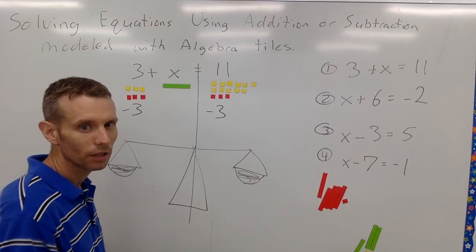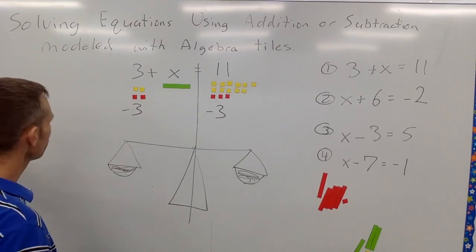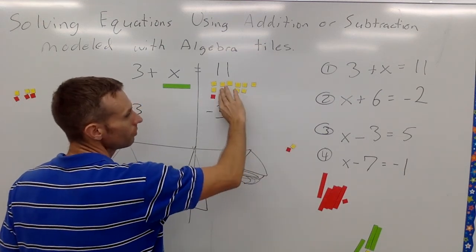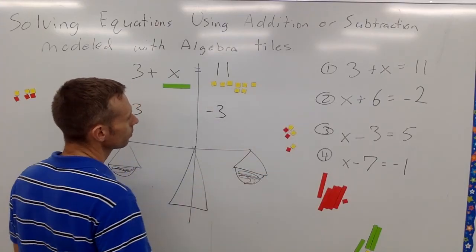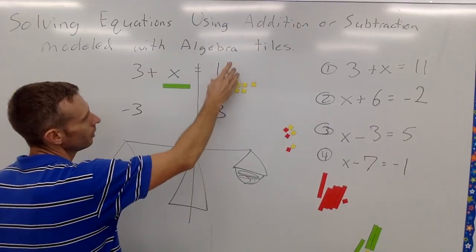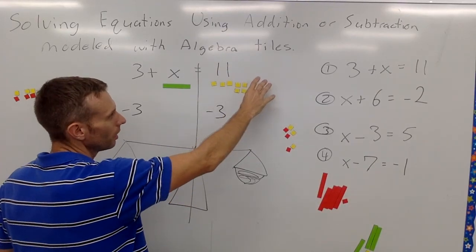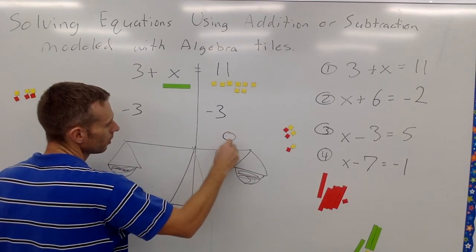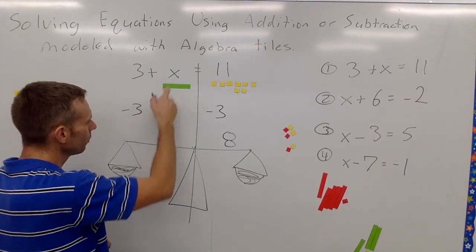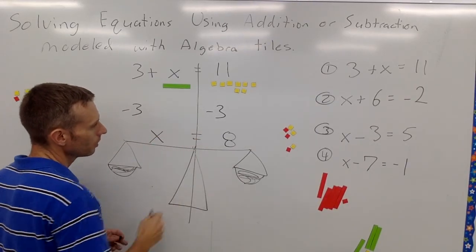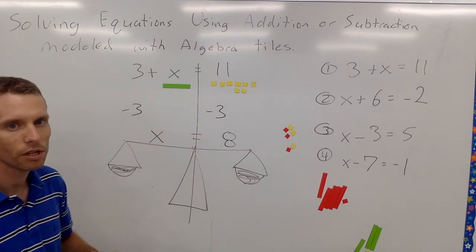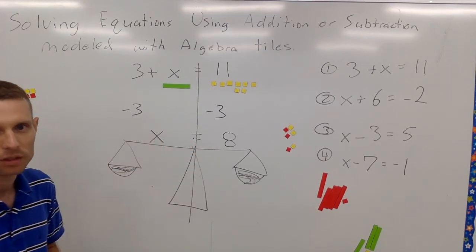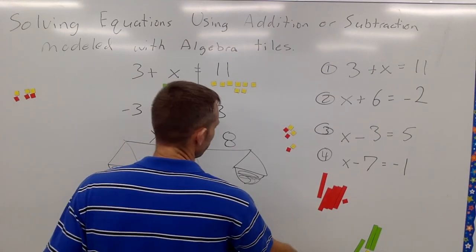When I do that, the positive three and negative three on the left cancel each other out. On the right, one yellow and one red cancel, another yellow and red cancel, the last one cancels — 11 minus 3 equals 8. So I'm left with 8 on the right side and X on the left. Since I did exactly the same thing to both sides, the equation stays balanced, and X equals 8.